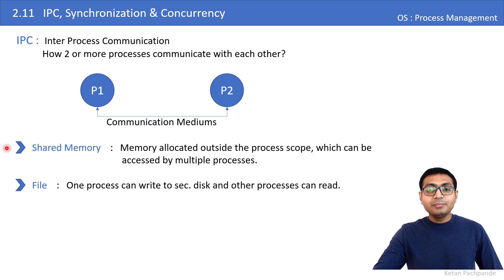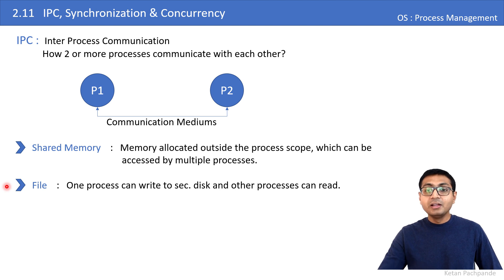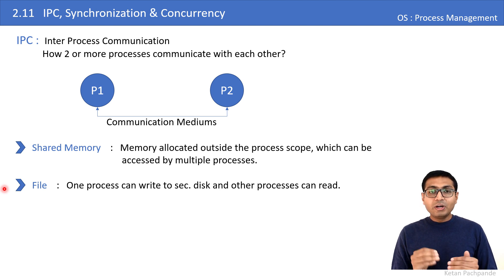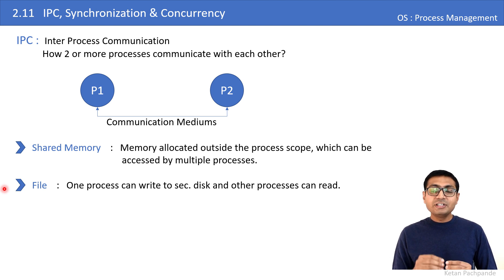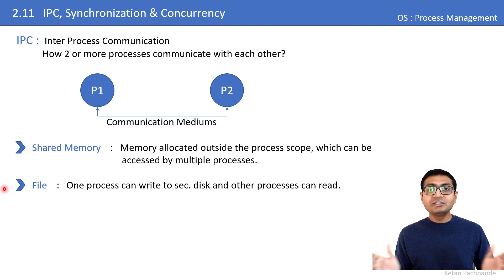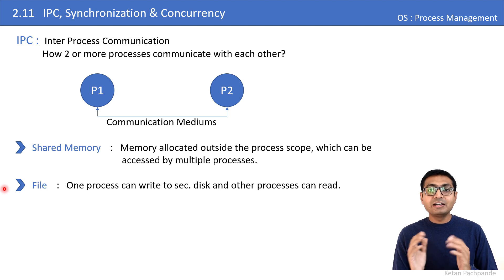Another simple and widely used medium is a file stored on secondary disk. Shared memory is stored on primary memory and is volatile, but a file stored on secondary disk is non-volatile. One process writes to a file on secondary disk, and once it completes writing, another process — on the same or a different machine — can read from that file. That is how two processes communicate by storing data on secondary disk.